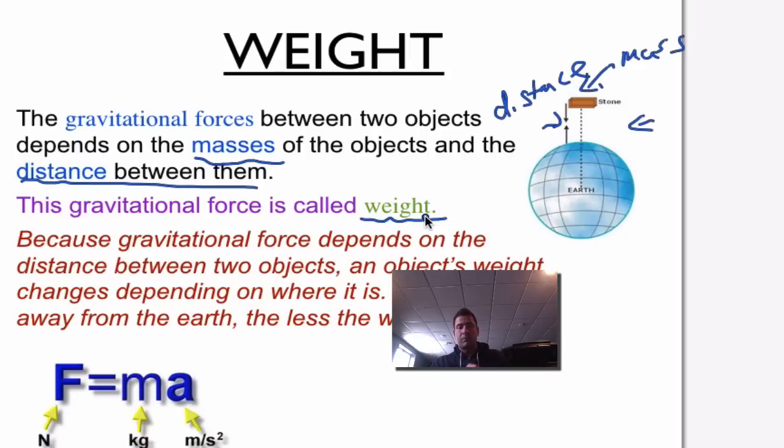The farther away from earth, the less the weight. For example, an airplane on the ground at the airport will have more weight than the airplane will have when it's up in the air at a high altitude, because it's farther away from the earth, and therefore there's going to be less gravitational force.